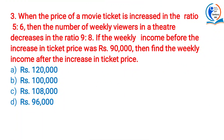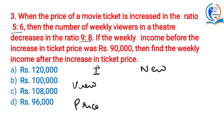Next question. When the price of a movie ticket is increased in the ratio 5 to 6, then the number of weekly viewers in the theatre decreases in the ratio 9 to 8. So the initial price to new price is 5 to 6, and initial viewers to new viewers is 9 to 8.